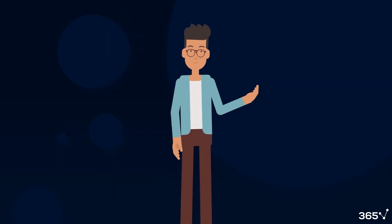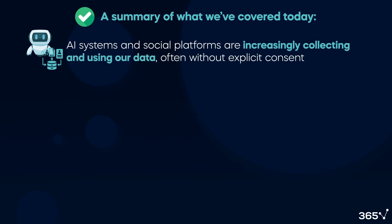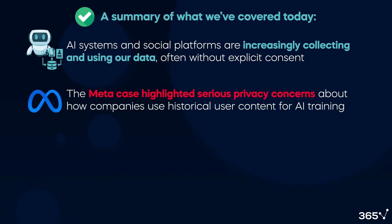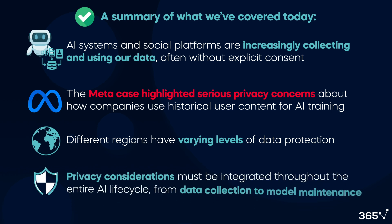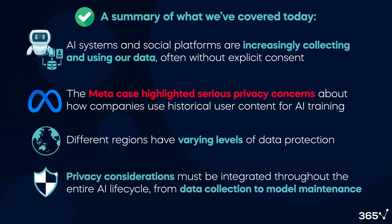Let's quickly recap what we've covered today. AI systems and social platforms are increasingly collecting and using our data, often without explicit consent. The Meta case highlighted serious privacy concerns about how companies use historical user content for AI training. Different regions have varying levels of data protection. Privacy considerations must be integrated throughout the entire AI lifecycle, from data collection to model maintenance.